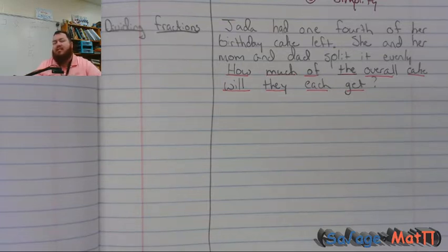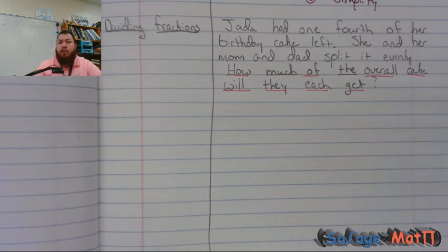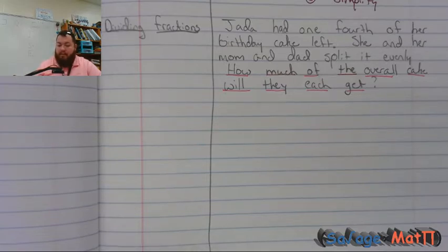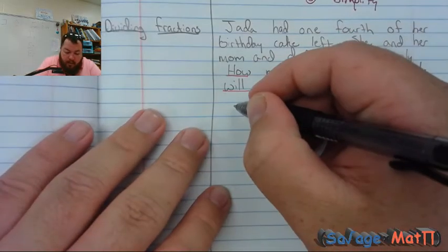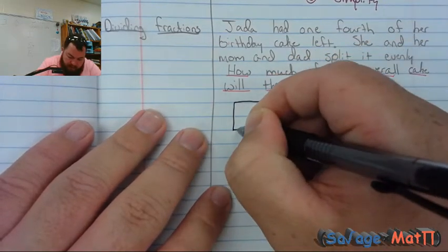What is it asking us to solve? It's asking us to solve how much Jada, mom, and dad each get of the overall cake. What do we know? There's one-fourth of her birthday cake left. So the first thing I'm going to do is model a birthday cake — I'll make it a sheet cake so it looks pretty easy.